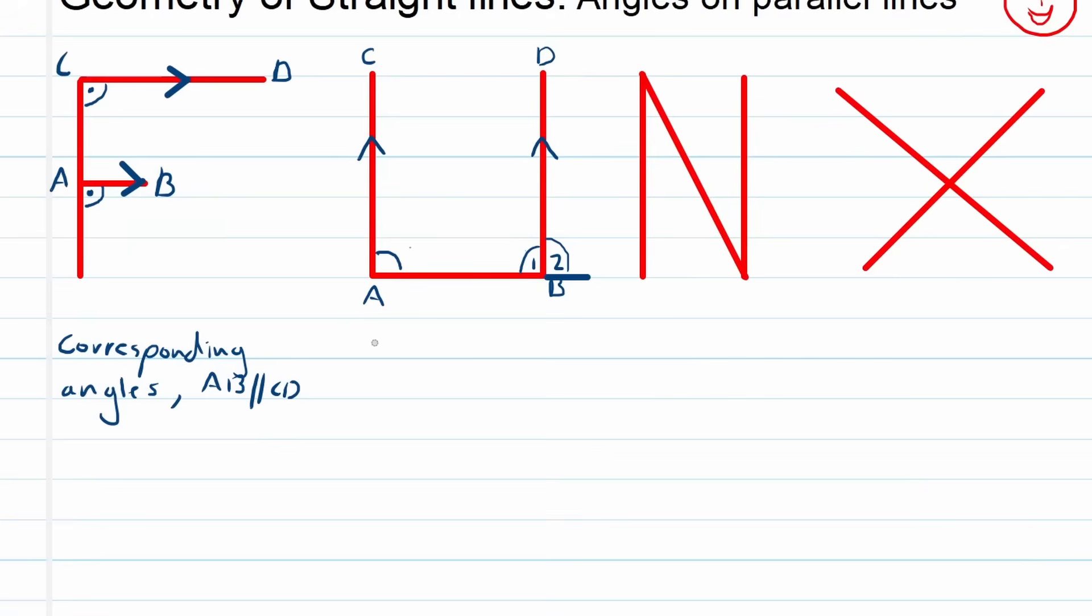So we say co-interior angles. Remember when we use this we have to state which lines are parallel. And that's very important. So that's your full reason. Any statement needs a reason and the moment you use parallel lines you have to state that are parallel. So that's the u for fun.